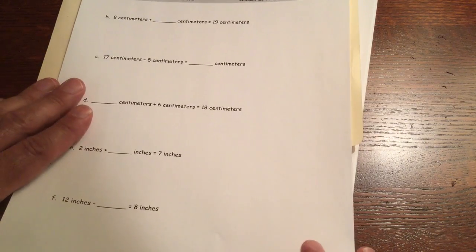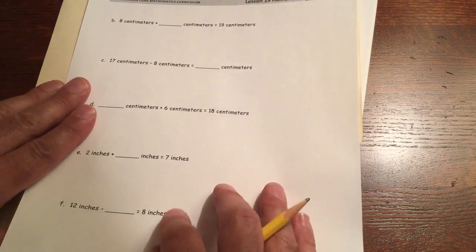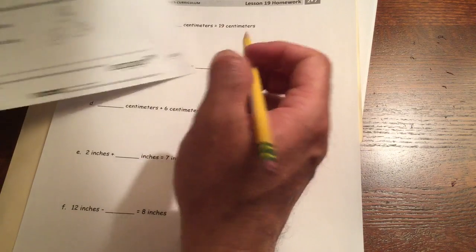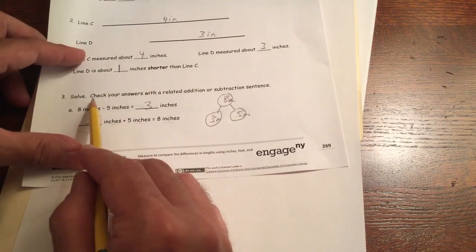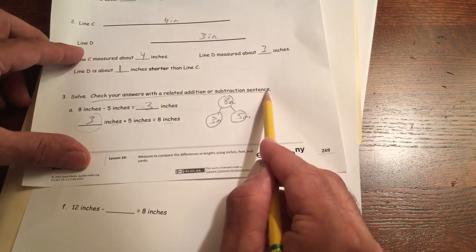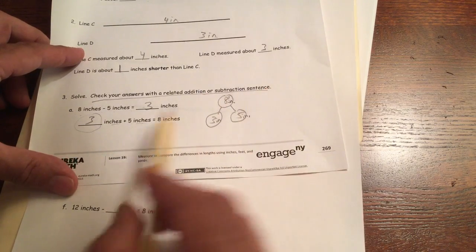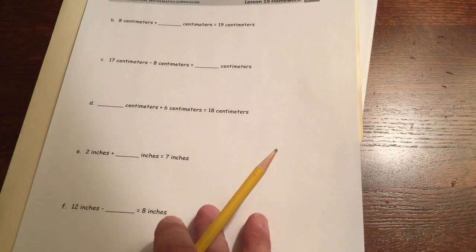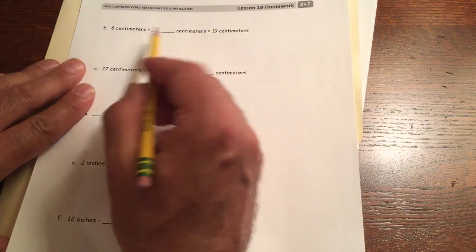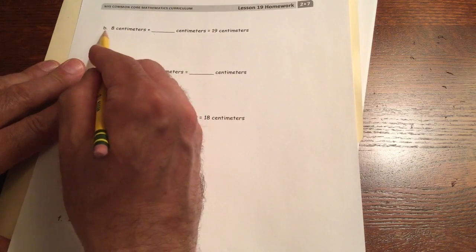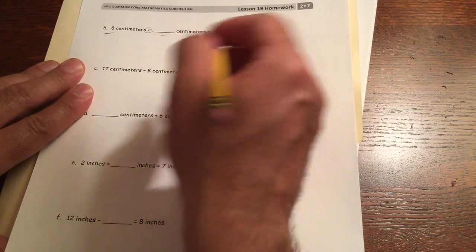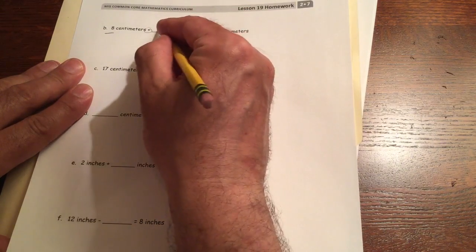And now we have some more missing addend problems. And remember, the directions for this are to check your answers with a related addition or subtraction sentence. So in this one, they set the sentence up for us. But on this second page, we're going to have to write our own. So we just have a missing addend problem here. We have 8 plus something is 19. The difference between 8 and 19 is 11.